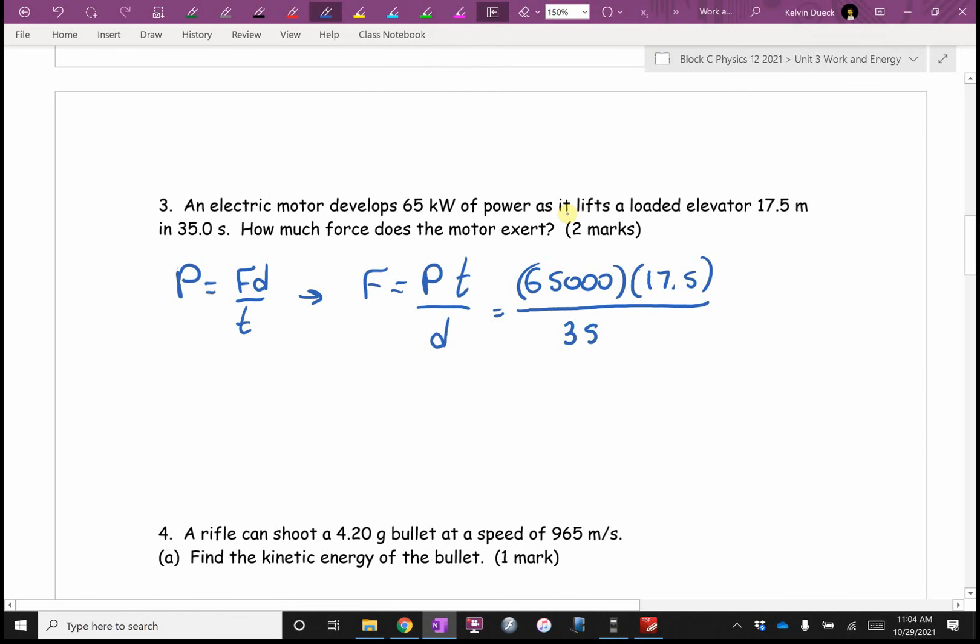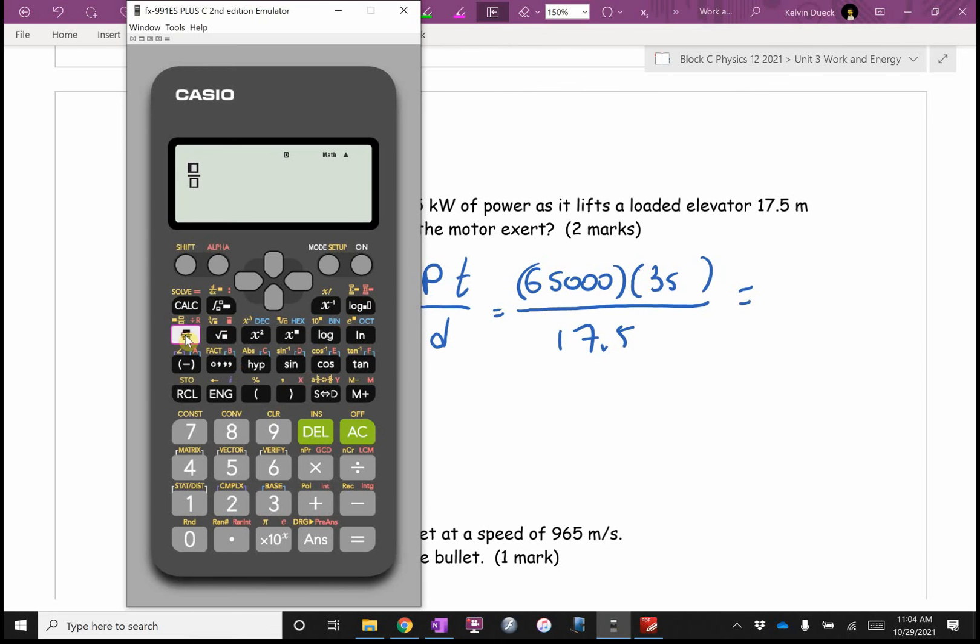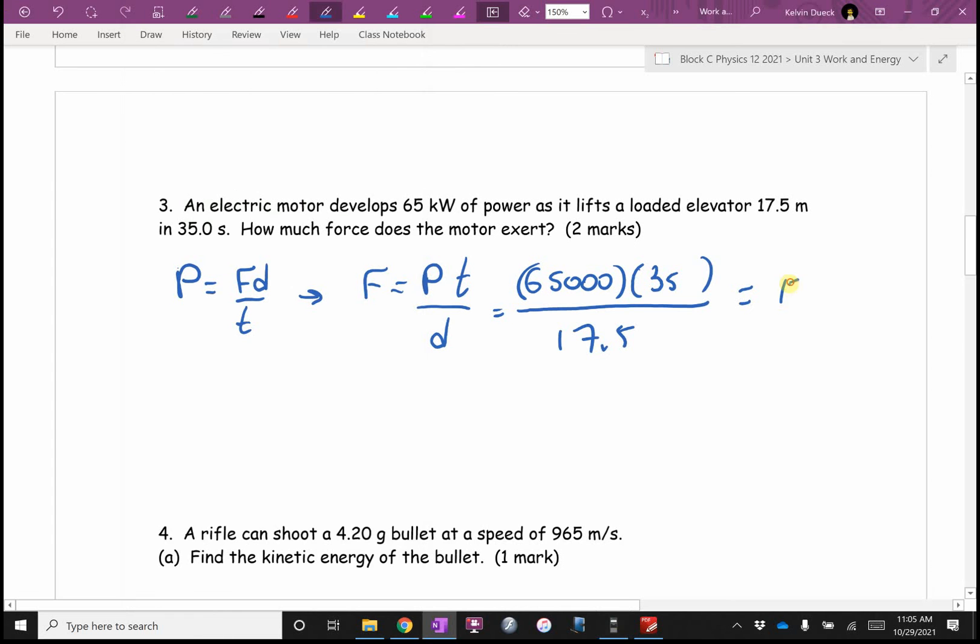Did I write it wrong? Did I do this wrong? Power, oh I wrote my numbers wrong. I wrote my equation right, but I put the 35 in the wrong place and the 17.5 in the wrong place. Well, that was kind of silly, thank you. 65,000 times 35 divided by 17.5. Oh, this has the fancy schmancy fraction button, bonus. 130,000 Newtons.